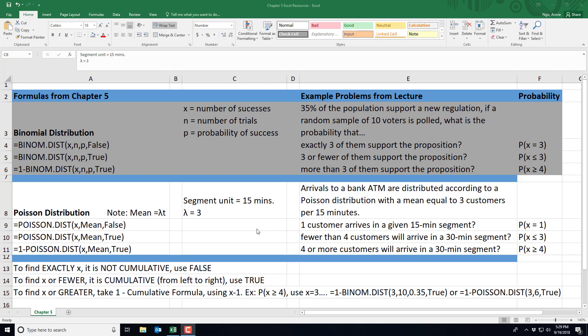In this video I'll show you how to use Excel to find the Poisson distribution. So here's our example from the lecture that states the arrivals to a bank ATM are distributed according to a Poisson distribution with a mean equal to three customers per 15 minutes.